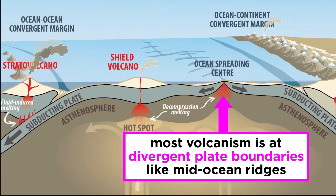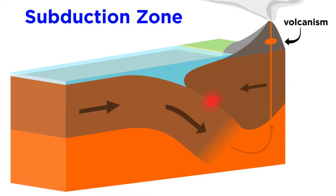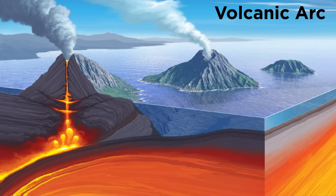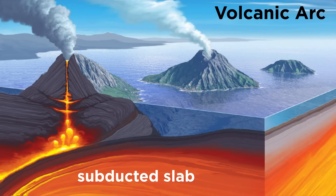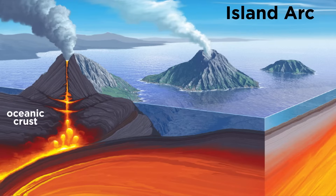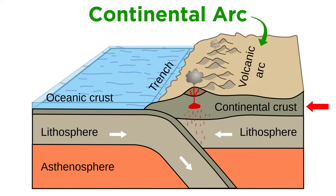Most of the active volcanism on Earth occurs at divergent plate boundaries, especially mid-ocean ridges. On land, volcanism occurs along subduction zones and above mantle plumes. Volcanoes form along a curved line called a volcanic arc at subduction zones, which corresponds to the area where the subducted slab releases its chemically bound water into the mantle. When the overriding plate is oceanic crust, the chain of volcanoes is called an island arc, and when the overriding plate is continental crust, it is called a continental arc.